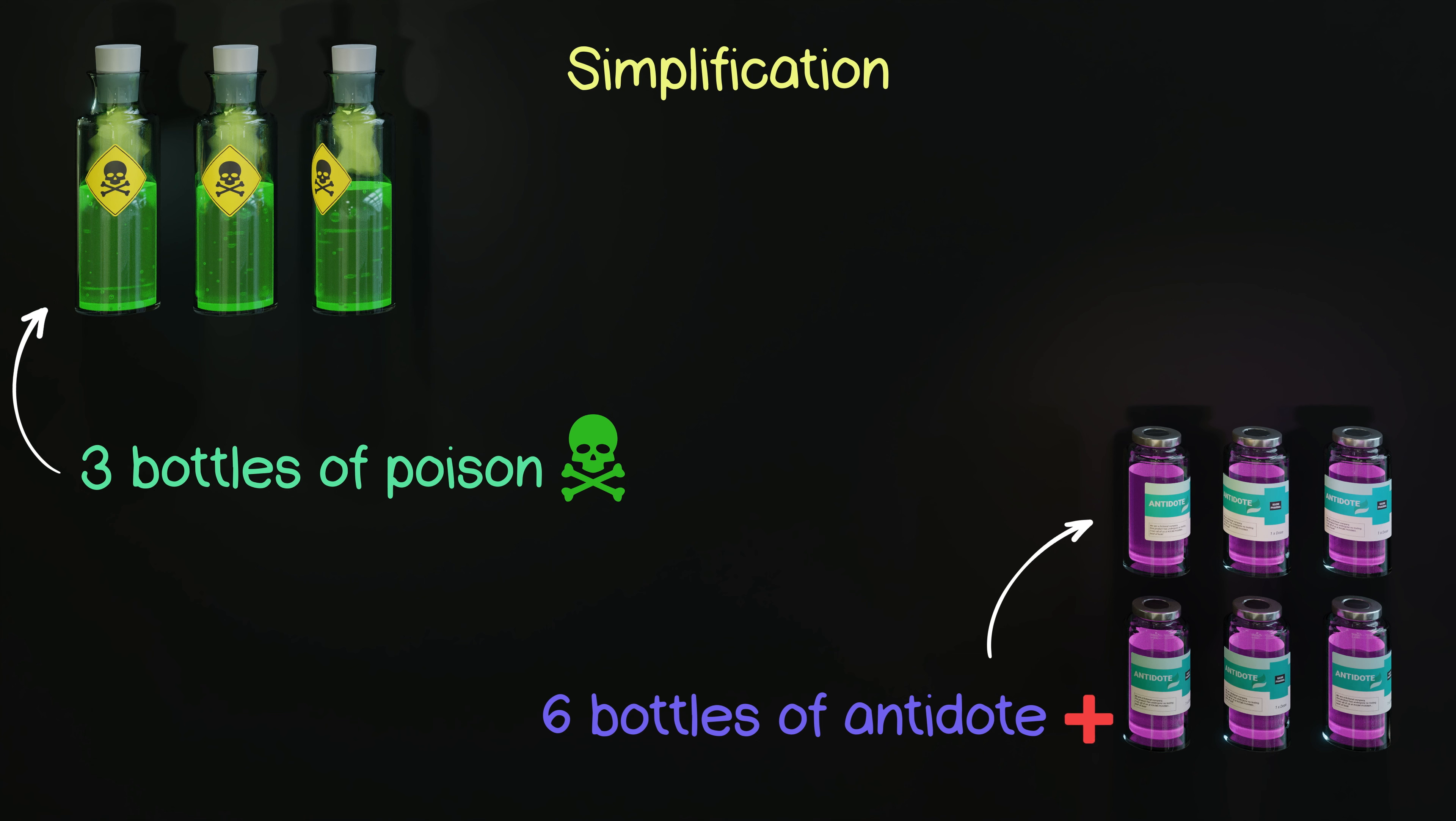Ratios simplify in the same way as fractions. Here we have three bottles of poison and six bottles of antidote. So our poison to antidote ratio is three to six. As a fraction that would be three over six.